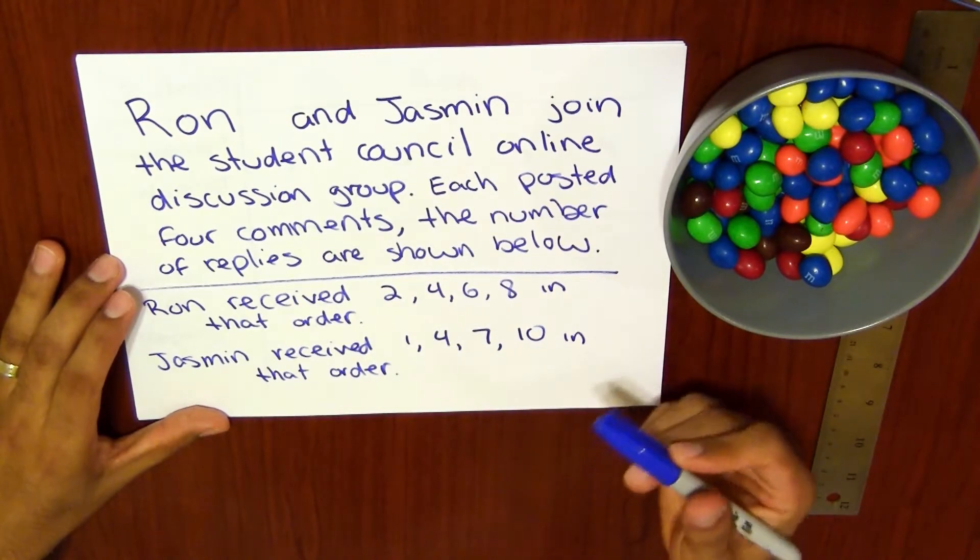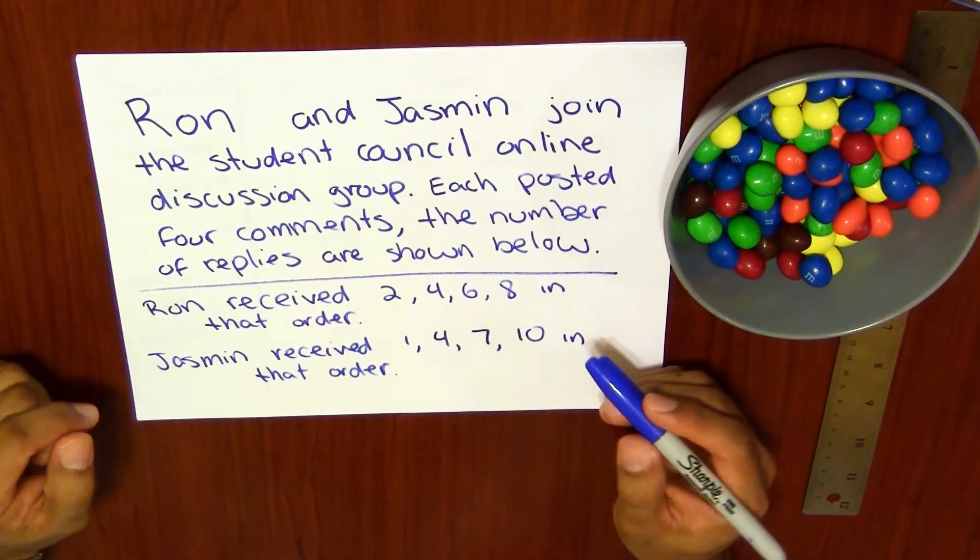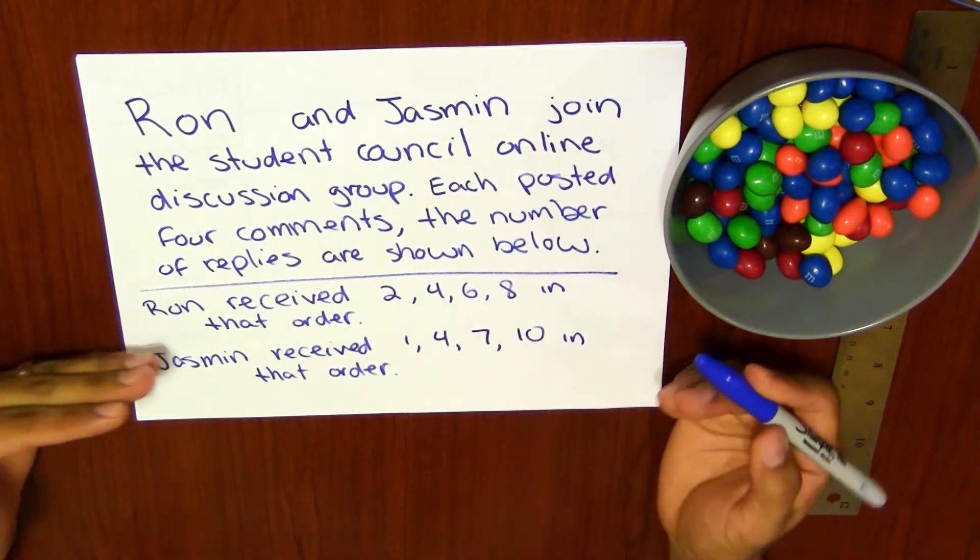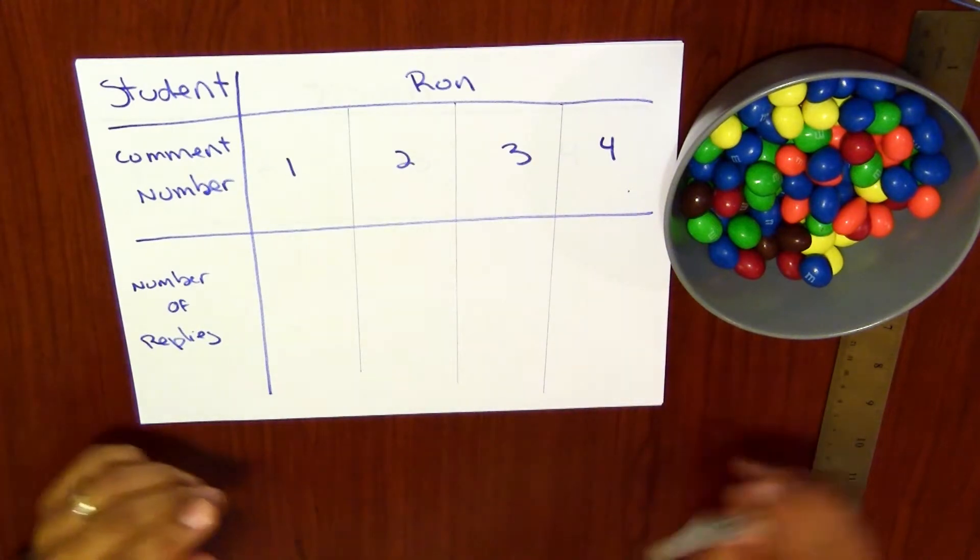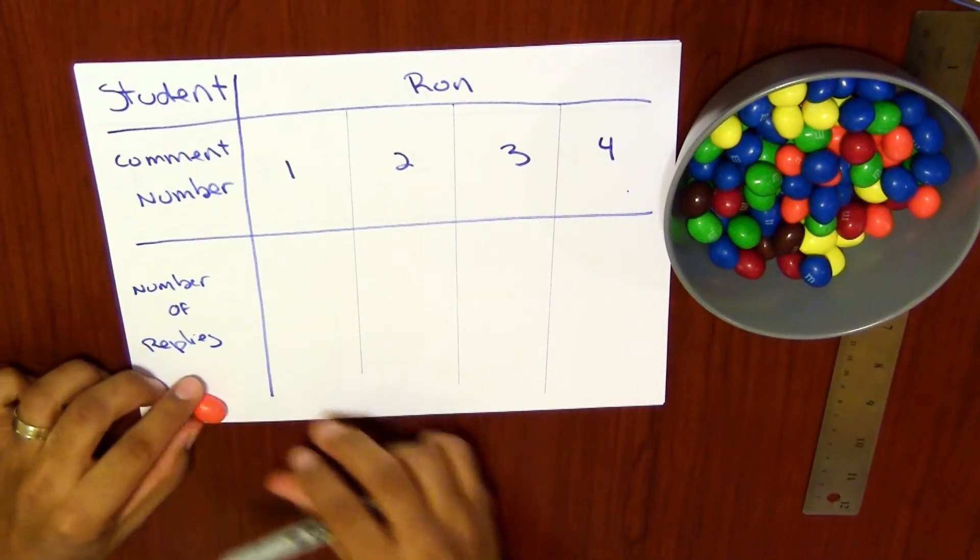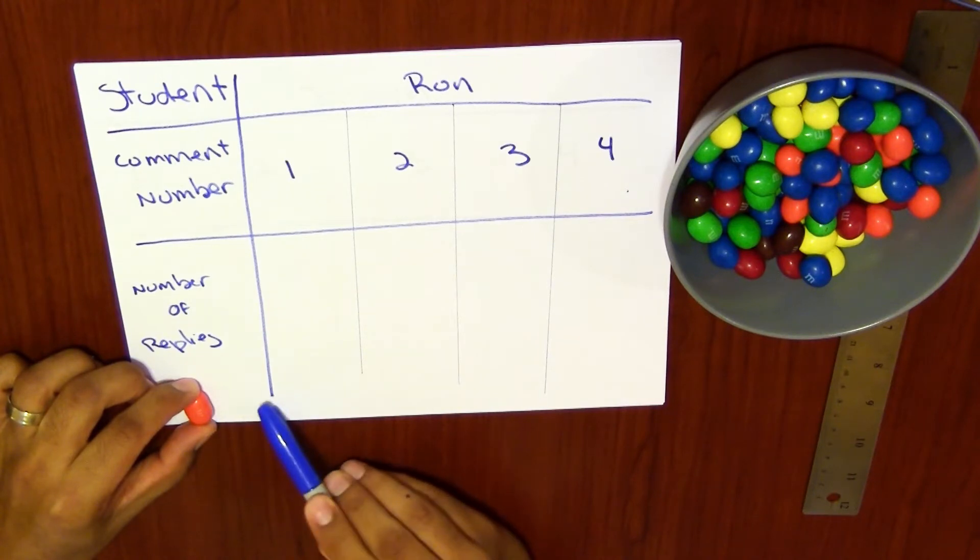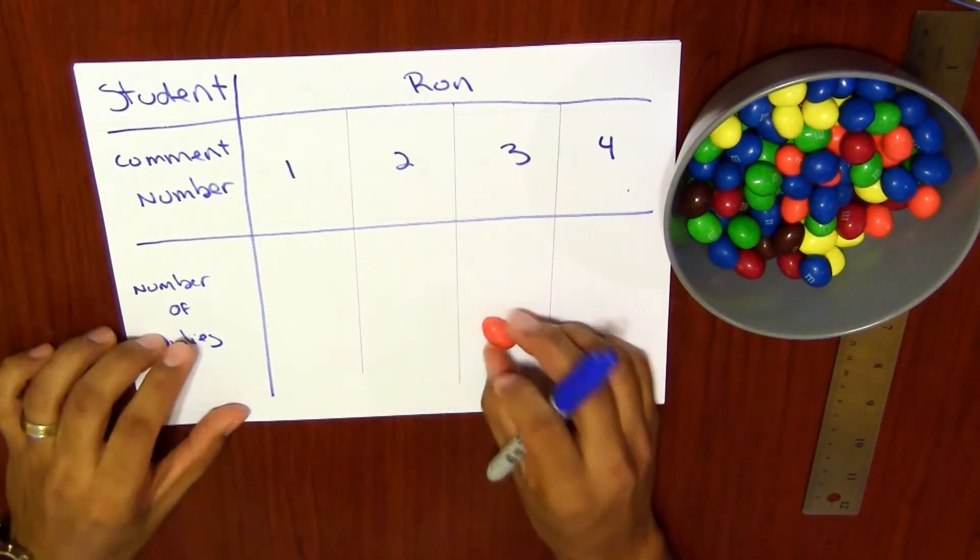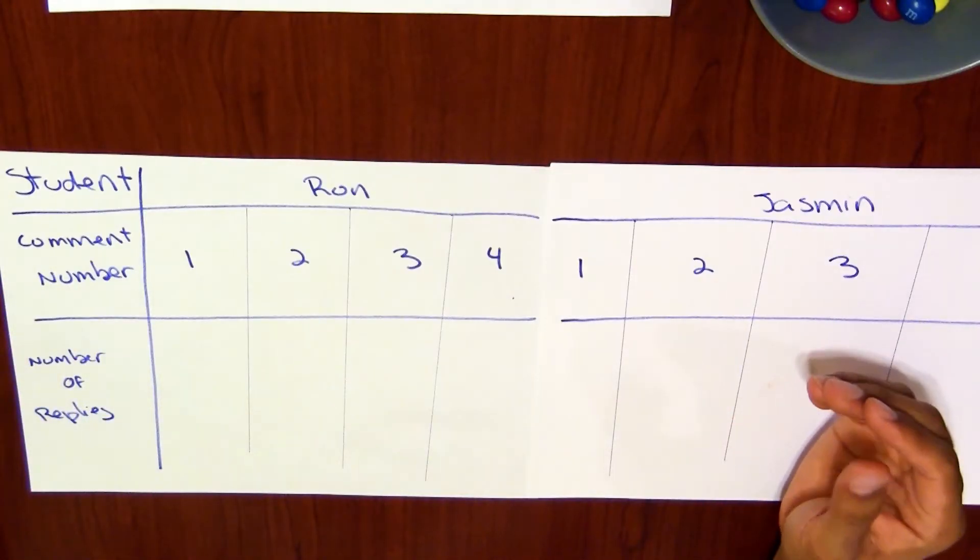So here we can have students model it, of course, with our M&Ms representing our replies. This would actually be a good chance to have them write out M&Ms equal one reply, so that they set this as the variable.